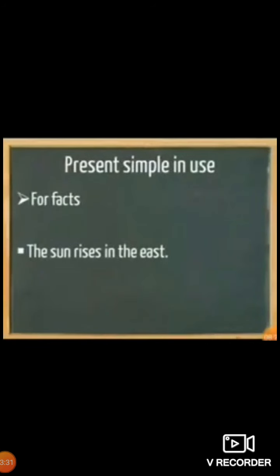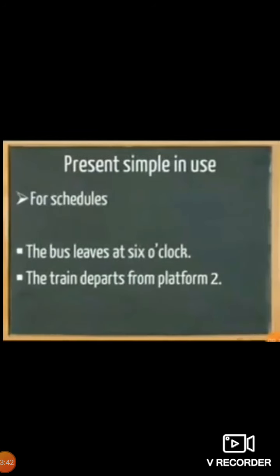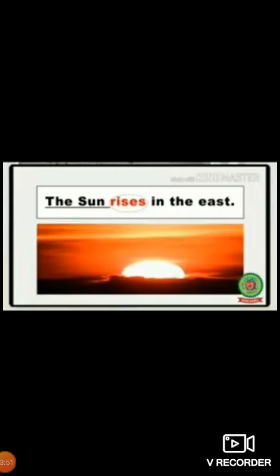For facts we also use the simple present tense. For example: 'The sun rises in the east.' This is a fact — it can't be changed. For schedules we also use the simple present tense: 'The bus leaves at 6 o'clock.' 'The train departs from platform 2.'